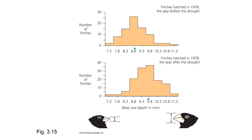This slide addresses postulate four — the idea that individuals with the most favorable variations survive longer and have the most offspring. Looking at data about finches that hatched before and after the drought, we see that beak depth is larger after the drought. The most reasonable explanation is that the birds that survived best had the biggest beak depth. So this data addresses postulate four.